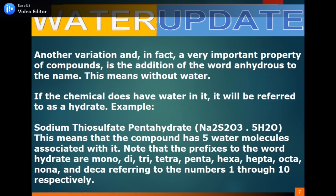Another variation, and in fact a very important property of compounds, is the addition of the word anhydrous to the name. This means without water. If the chemical does have water in it, it will be referred to as a hydrate. For example, sodium thiosulfate pentahydrate means the compound has five water molecules associated with it. Note that the prefixes to the word hydrate are mono, di, tri, tetra, penta, hexa, hepta, octa, nona, and deca — referring to the numbers 1 through 10 respectively.